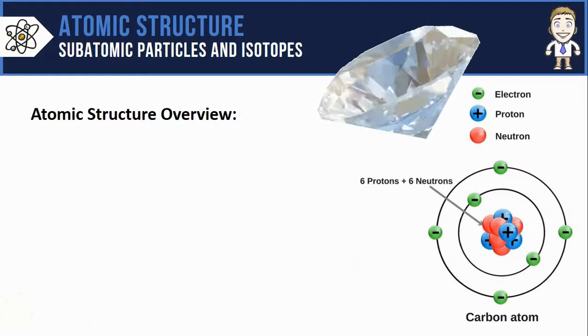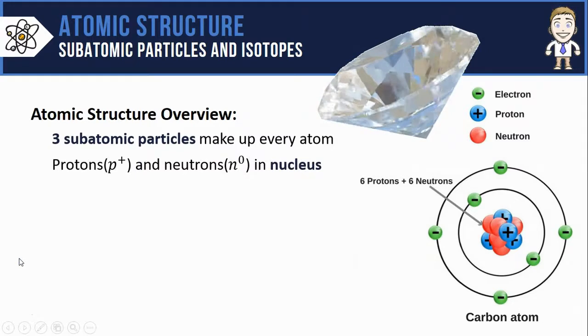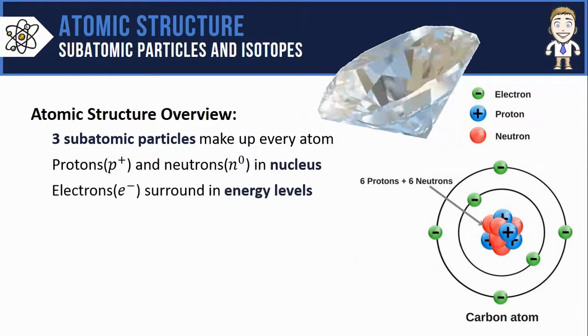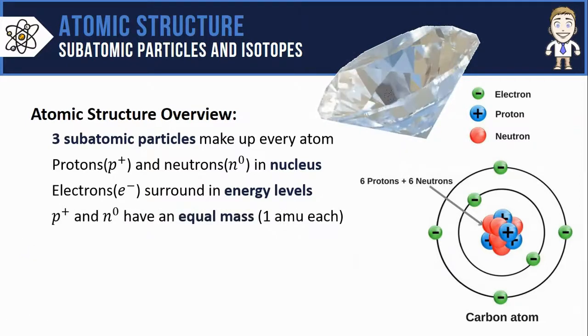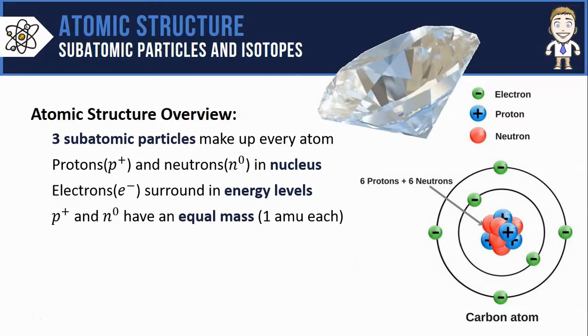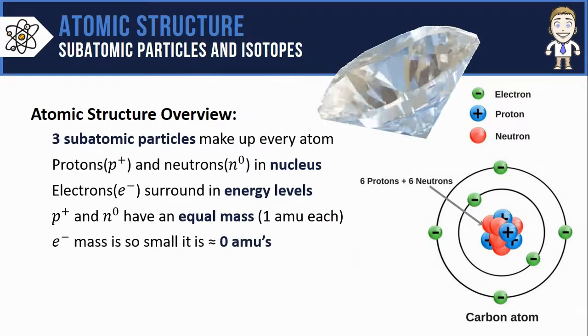Just like all atoms, there are three subatomic particles that make up these carbon atoms: protons and neutrons which we find in the nucleus, and electrons which surround the nucleus in energy levels. The protons and neutrons are the heavy parts of the atom and they have equal masses at one amu or atomic mass unit each. Whereas the electrons are so insanely light and small that we say they have approximately no mass whatsoever.